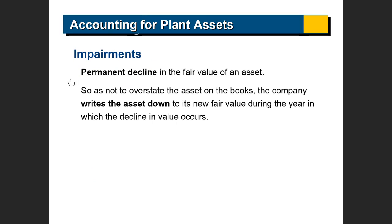The next thing that can happen to your asset is impairment, or permanent decline. If it becomes totally useless, you remove the asset from the balance sheet and remove the accumulated depreciation associated with it. You credit the equipment and debit the accumulated depreciation. It no longer stays on your balance sheet. It's called permanent impairment — meaning it cannot be used anymore, it has no more value, it is useless.